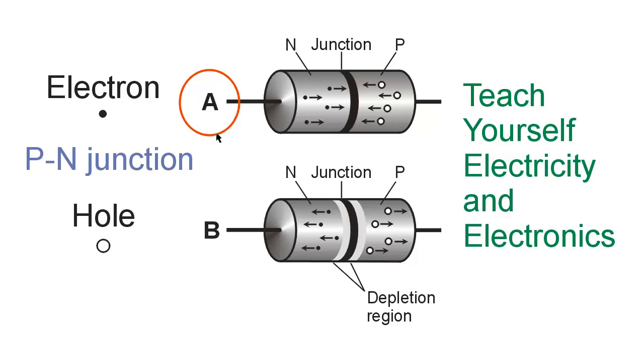Whereas, when we reverse bias the diode, the exact opposite situation occurs, the N-type material is relatively positive with respect to the P-type material.